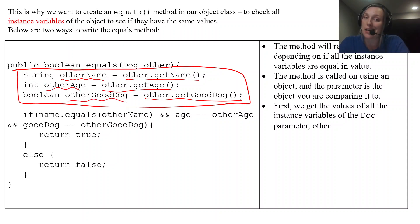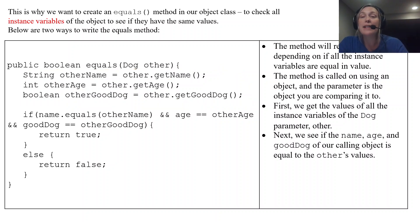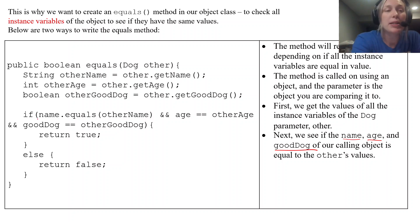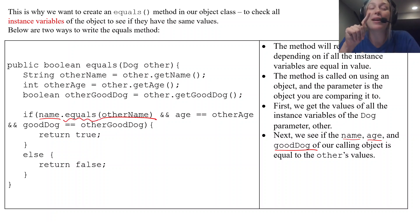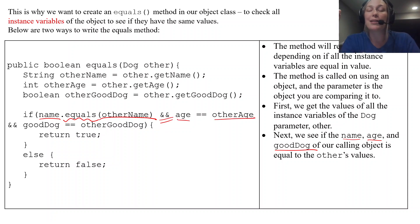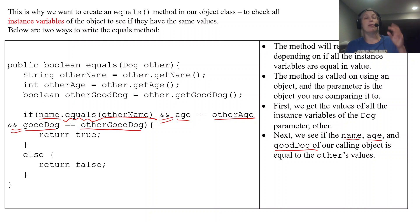Next, I check whether name, age, and goodDog of the calling object equal the other object's values. I use name.equals(otherName) for strings — because we compare strings with the dot equals method since String is an object. I use double-equals for the integer age, and double-equals for the boolean. If all three are equal, I return true, meaning this dog equals the other dog. Otherwise, I return false.